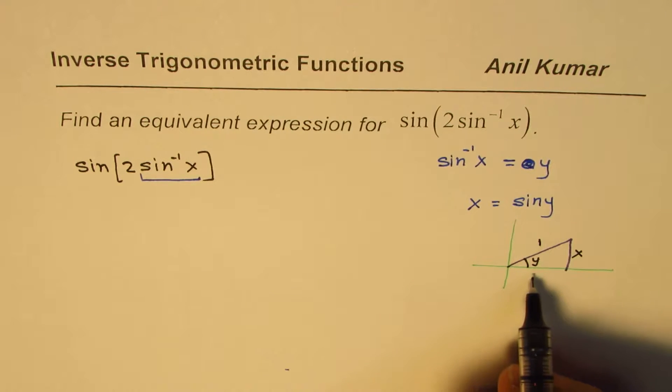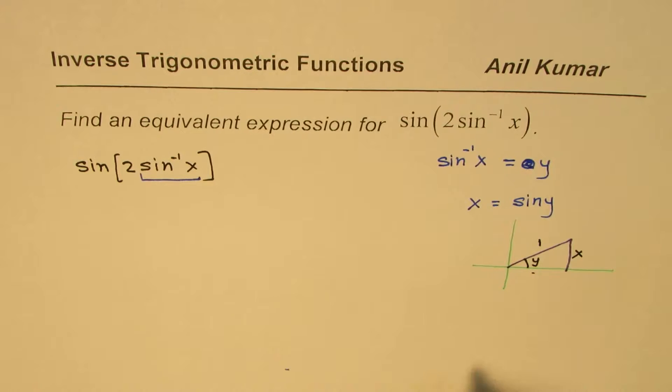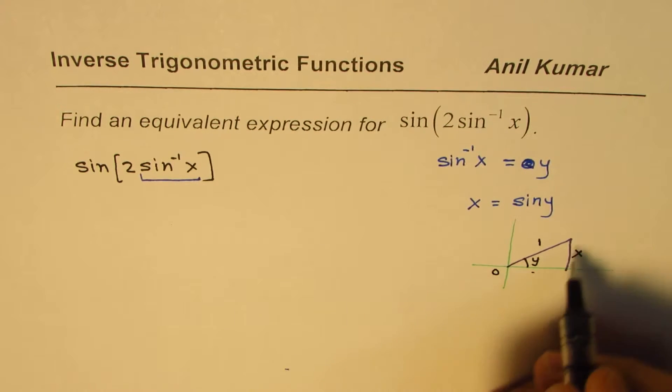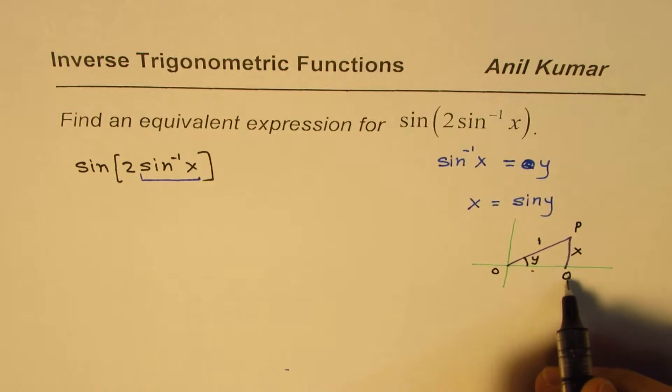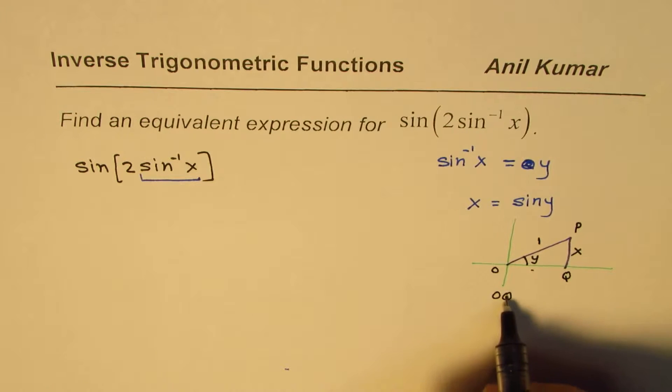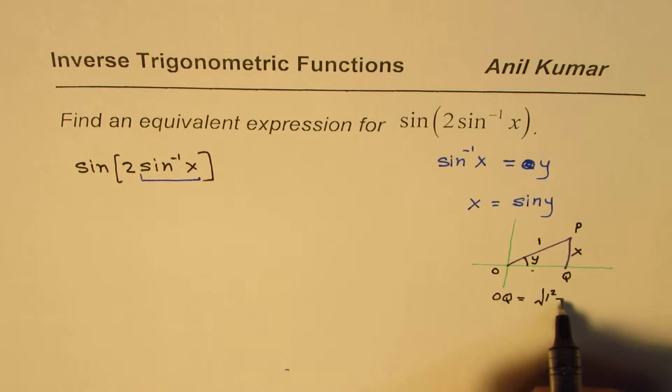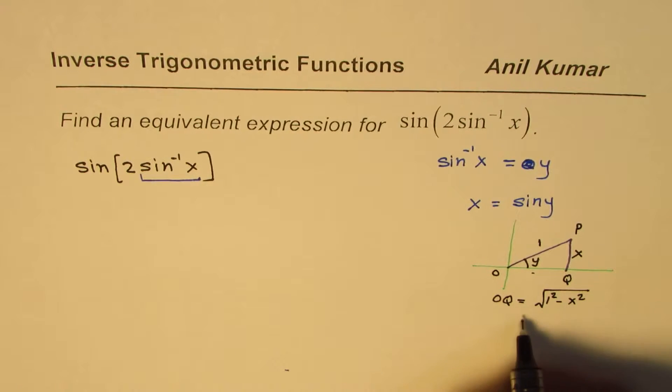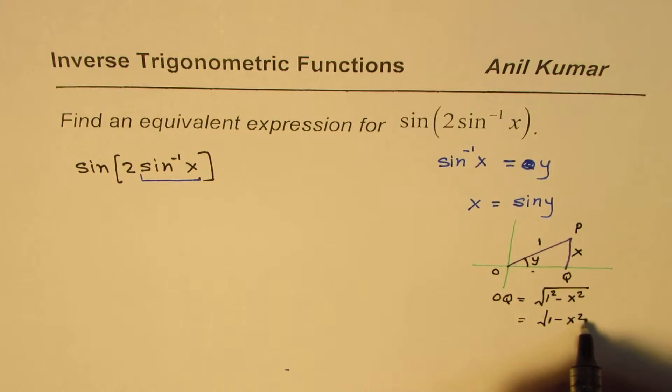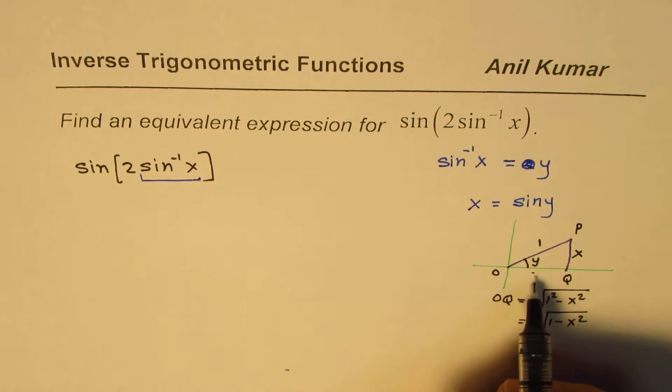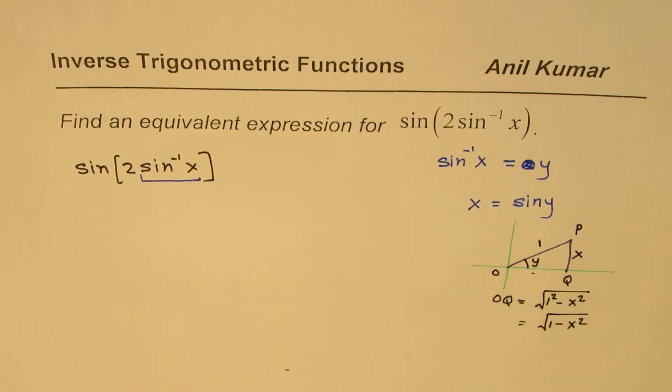Now, if that is a triangle, what is the adjacent side? So let me say this is OPQ. So OQ is equals to square root of 1 square minus x square, which is square root of 1 minus x square.